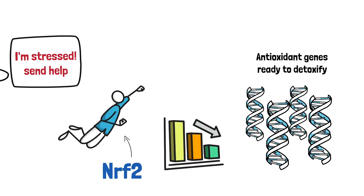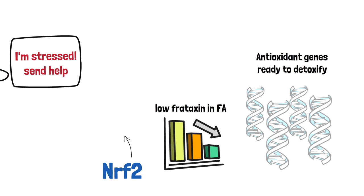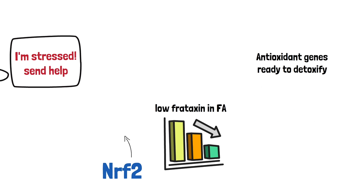For reasons that are not clear, when frataxin levels are low in FA, NRF2 is also low instead of being elevated, making a bad situation, the low frataxin levels, even worse because it decreases the natural ability of the cell to reduce stress and reduces energy production.